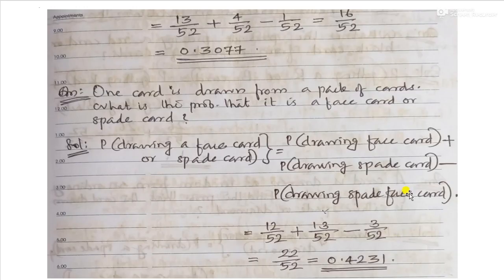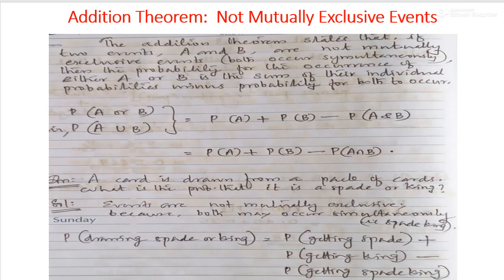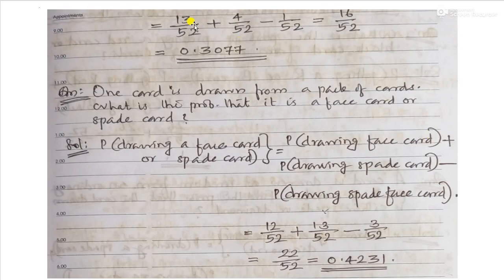The probability of getting a spade card is 13 by 52. The probability of getting a king is 4 by 52. The probability of getting a spade king is 1 by 52. So P(spade or king) equals 13 by 52 plus 4 by 52 minus 1 by 52, which equals 16 by 52, or 0.3077.